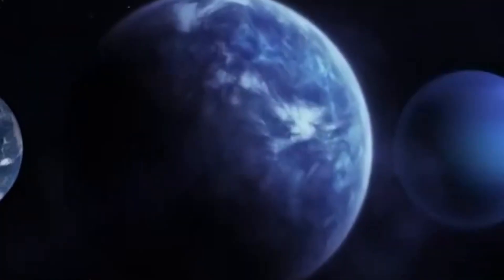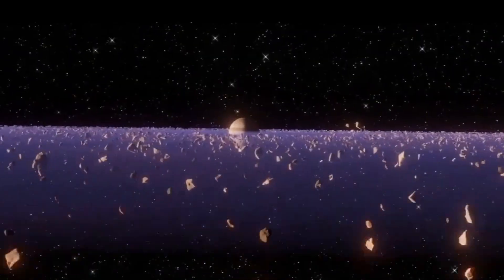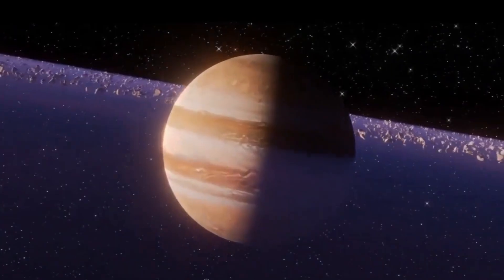It is also believed to be tidally locked, meaning one side always faces the star while the other remains in perpetual darkness. This could lead to extreme temperature differences. Proxima b's surface temperature might vary significantly between day and night, which could be indicative of its atmospheric properties.